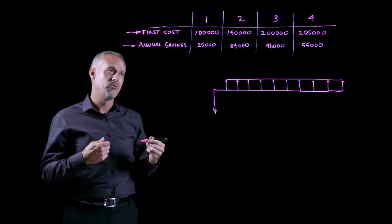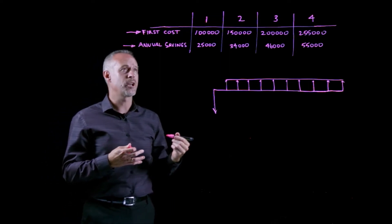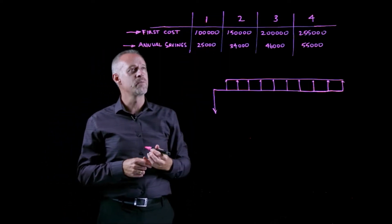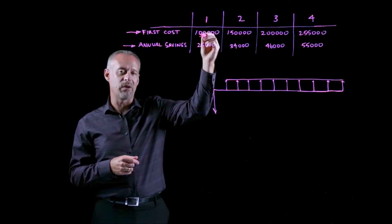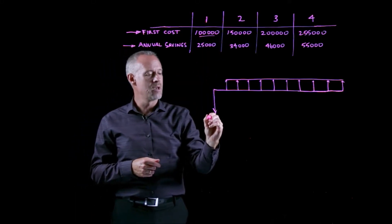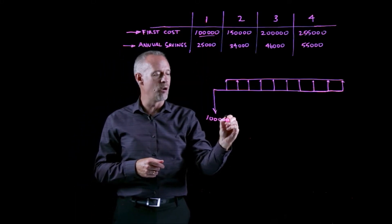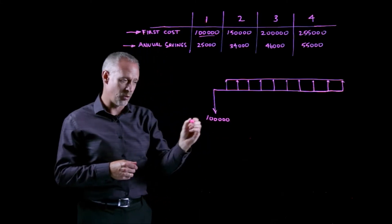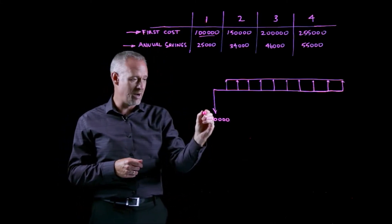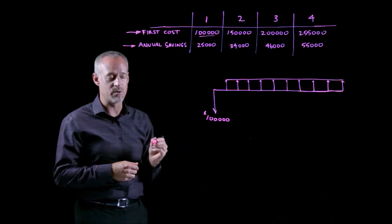Now, if we look at, just for instance, if we look at alternative number one, we could purchase this equipment. And if I look at it on a cash flow diagram, that would mean we have a down arrow, a cost. Or in other words, this is a negative amount that occurs at time t equal to zero.